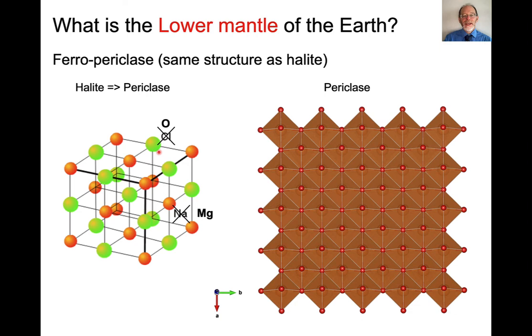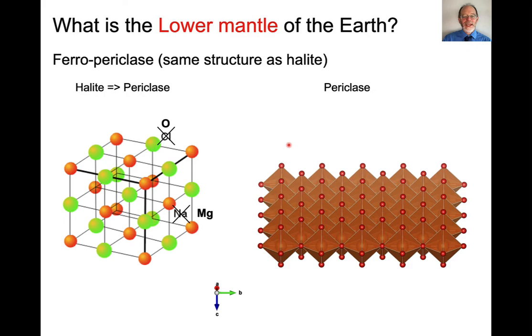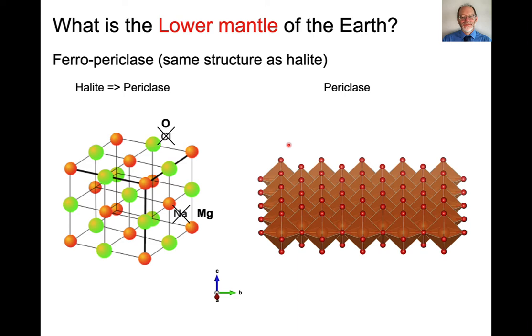If you remember, halite has sodium in octahedral coordination with chlorine, and ferropericlase is the same thing. It just has magnesium here instead of sodium and oxygen instead of chlorine, and this is a very dense structure. If you look at it in a typical Vesta image, it looks pretty boring. It's just a whole bunch of magnesium oxide octahedra all stacked together as tightly as possible. So that gives you a sense of this sheet, and then these sheets are connected in three dimensions.